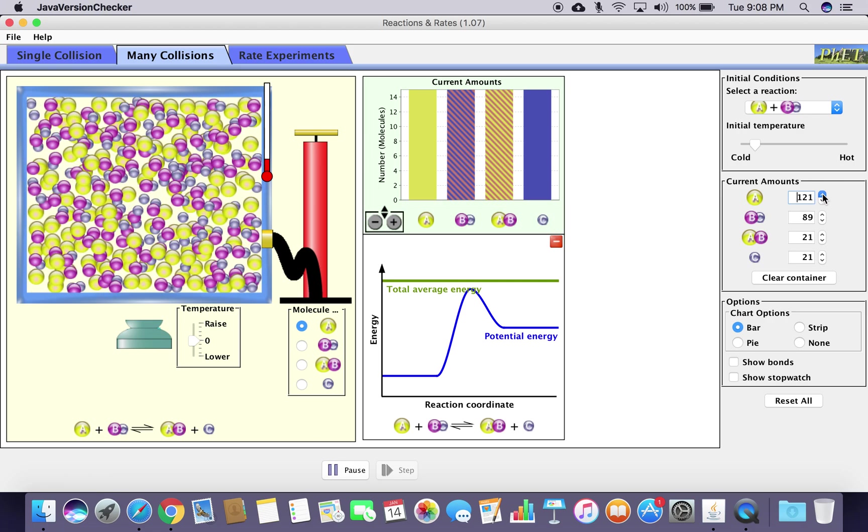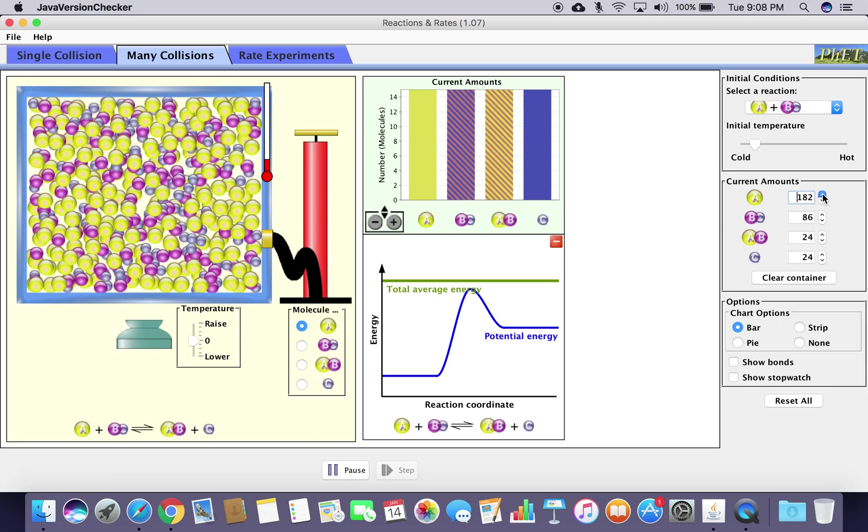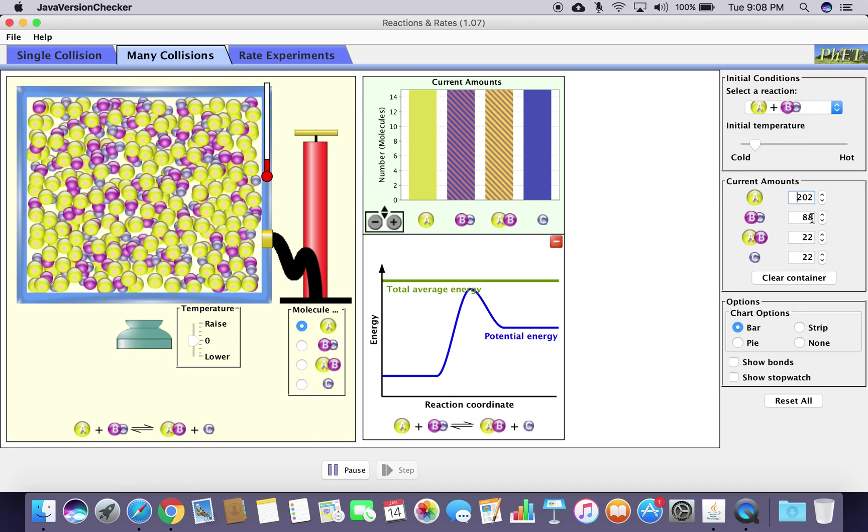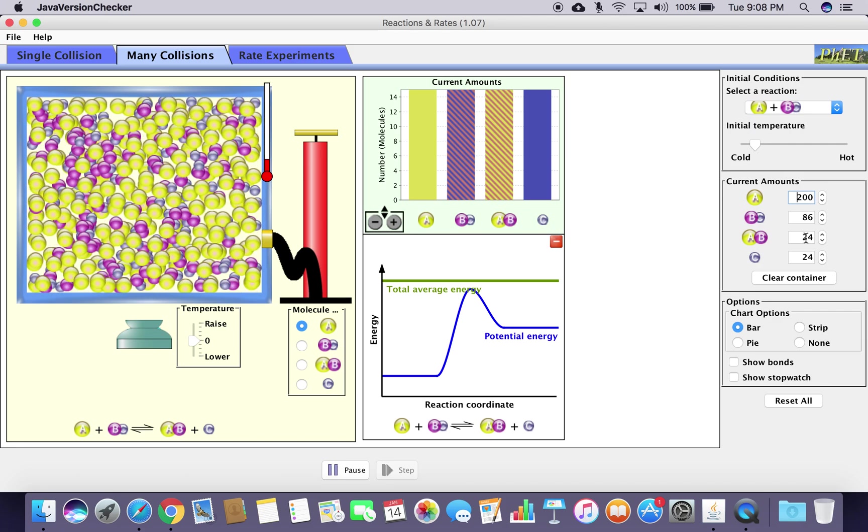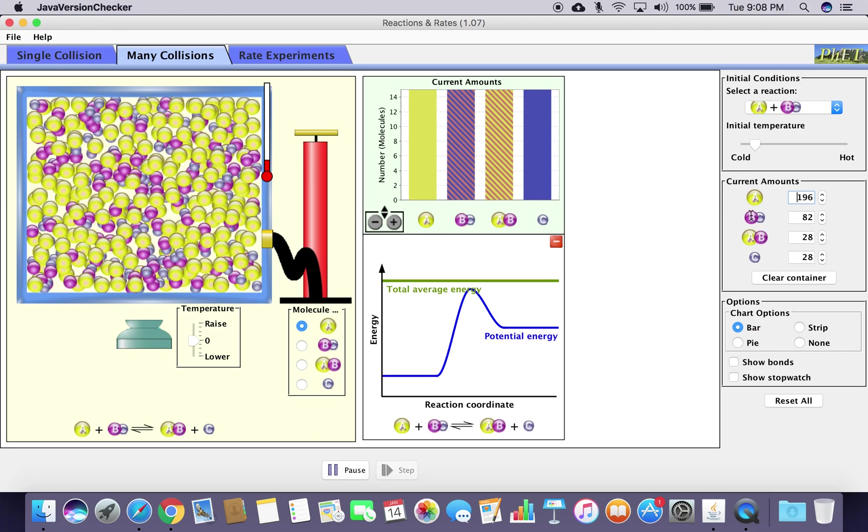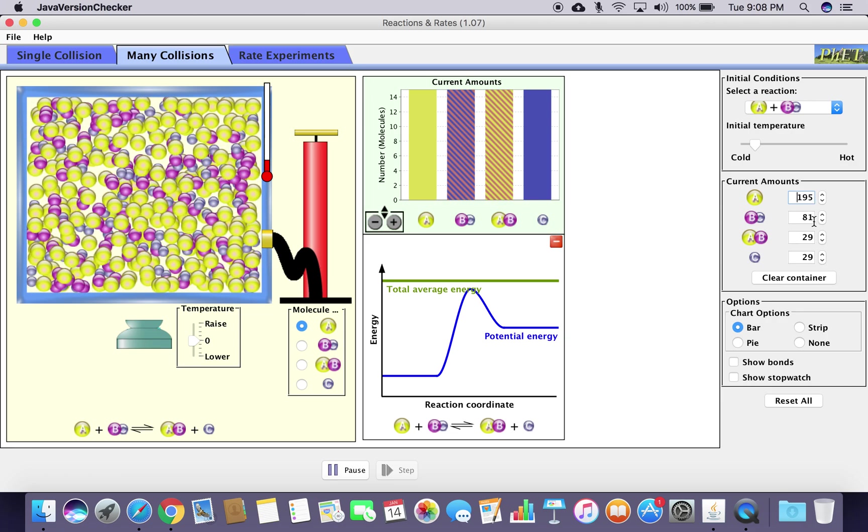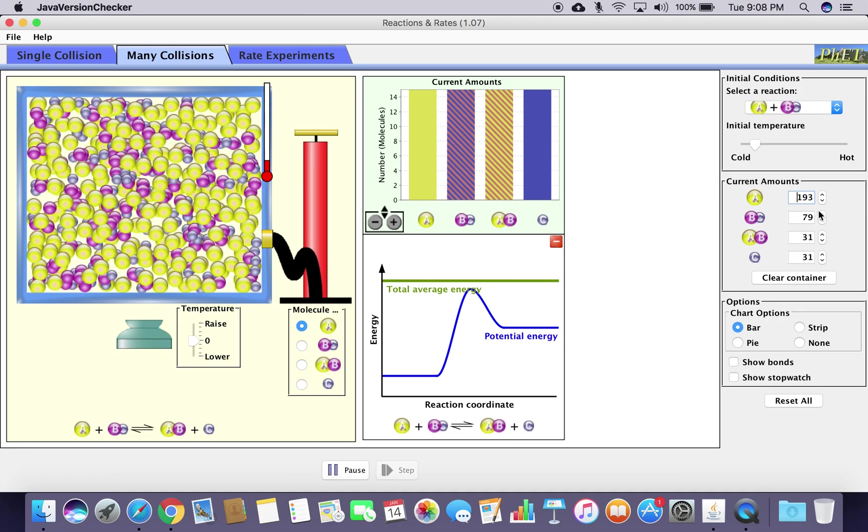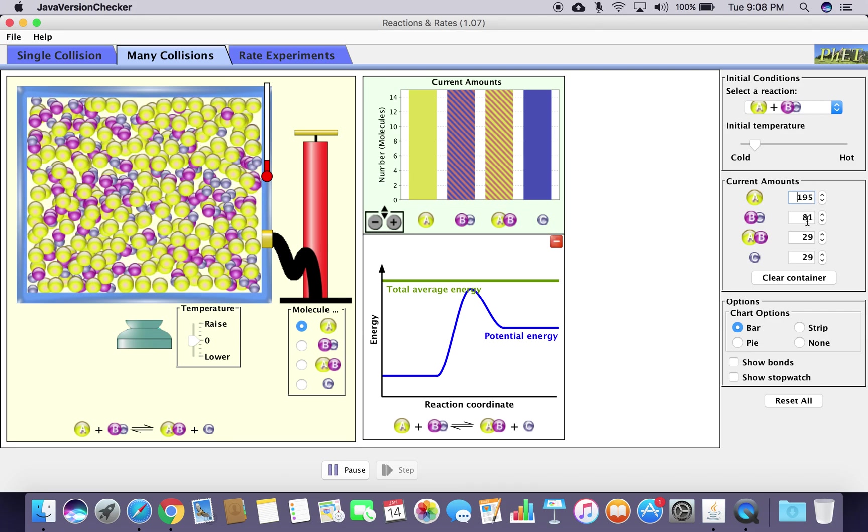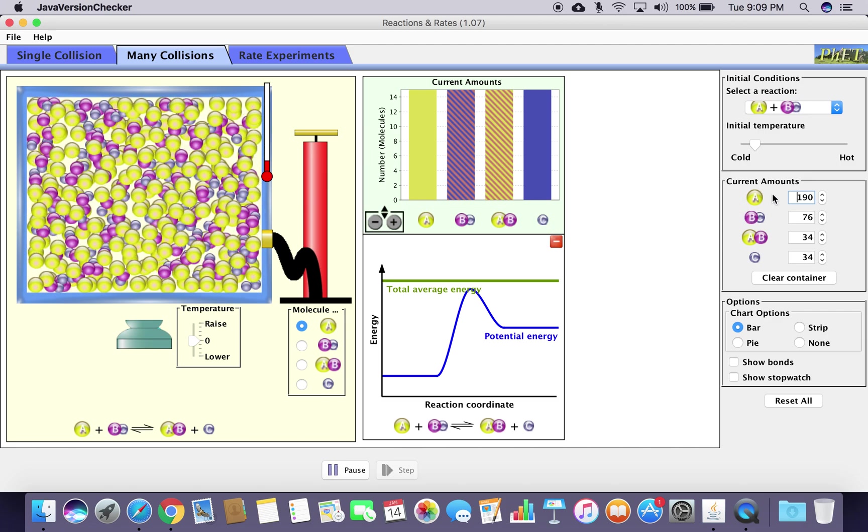We're expecting BC to go down because we're putting the reagent A in excess. It was at 89, 89, 21, 21, but now it's going to continue to go down. It went from 89 to 79, 78, 77, so we're knocking it down. If you were to add a whole lot more A, it keeps driving this number down as it's reacting more readily with BC because there's just a whole lot more A around.